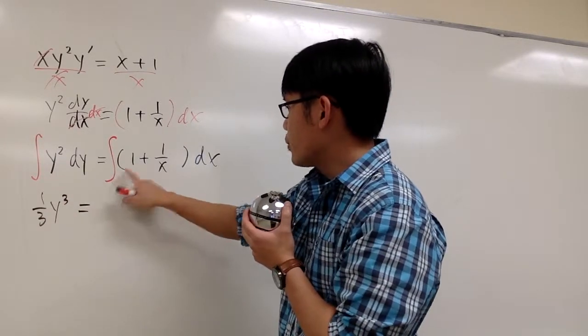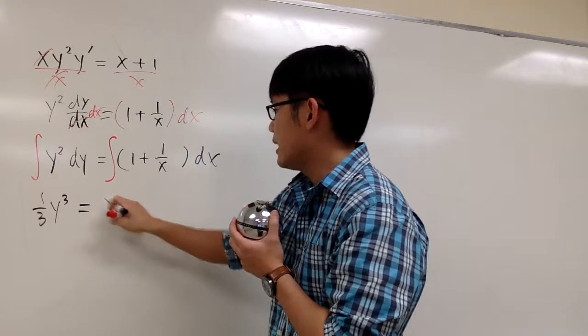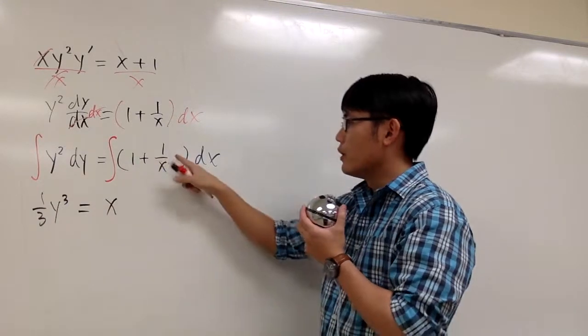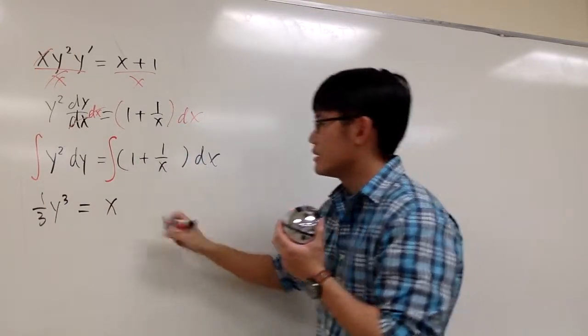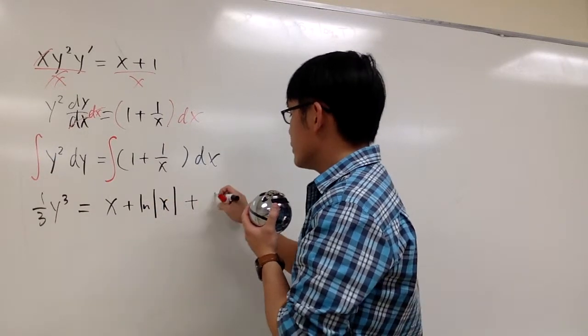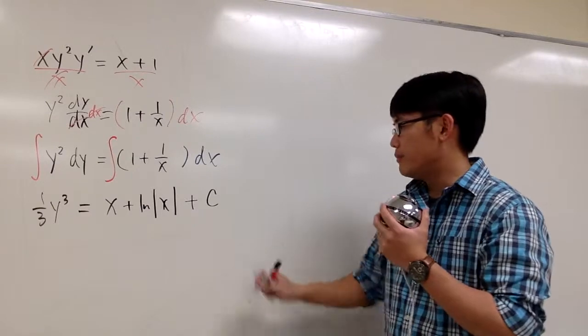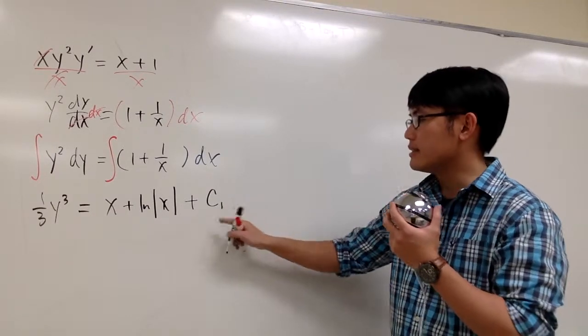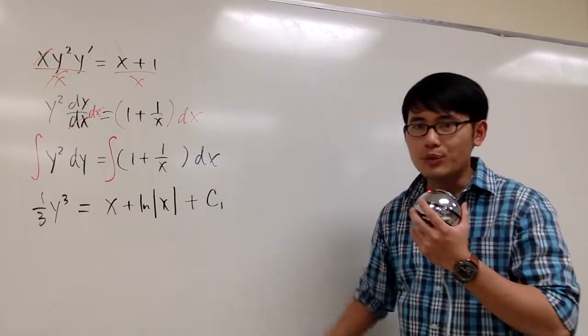So right here, we have integral of 1 in the x world, so that's x, and integral of 1 over x in the x world is plus ln absolute value of x. And as I mentioned, we put a plus c on the right-hand side, and perhaps I will keep track with my constants. I will use c1 right here.